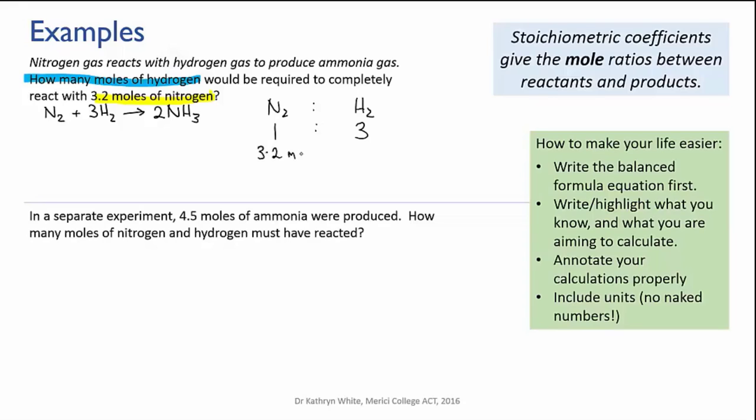Here we have 3.2 moles of nitrogen. So we multiply that by three to give 9.6 moles of hydrogen. And that answers the question. 9.6 moles of hydrogen will react exactly with 3.2 moles of ammonia.